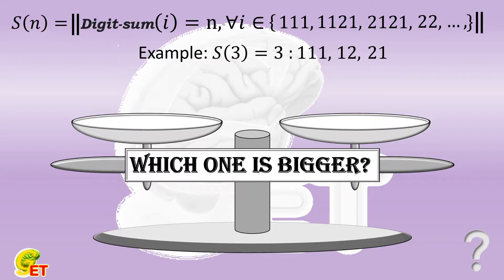The first number in our comparison today is S of 6 times 2022, which is the number of all those elements in this set whose digit sum equals 6 times 2022. The other one is 10 to the 2022 power. Which one is bigger? Why not give a try, and we will come back soon.